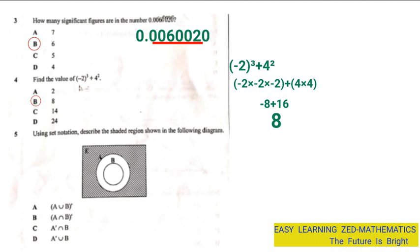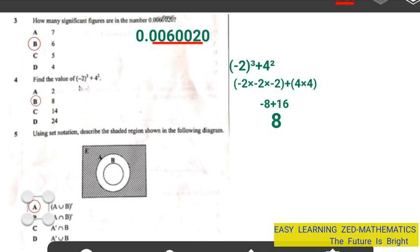The shaded area is showing members which do not belong in neither A nor B. Therefore, we can say the shaded area is (A union B) complement, and the correct answer is A — not B but A. So the correct answer is (A∪B)', which is answer A. Now let's go to question 6.